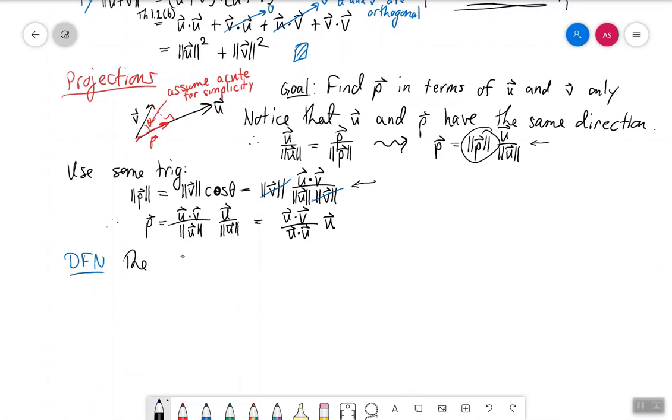The projection of v onto u is written proj sub u of v, and is defined to be u dotted with v divided by u dotted with u times u.